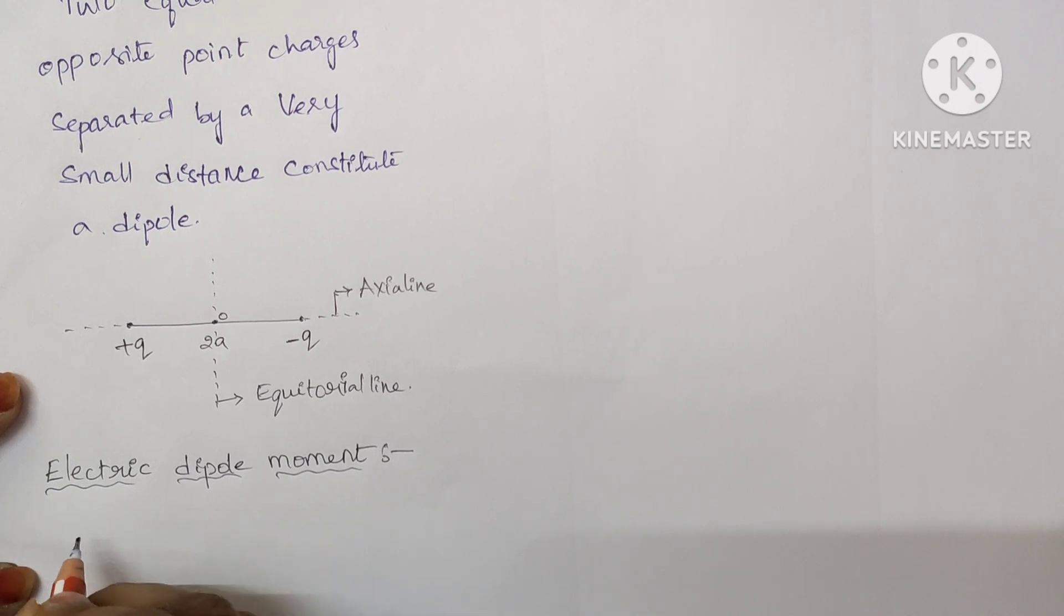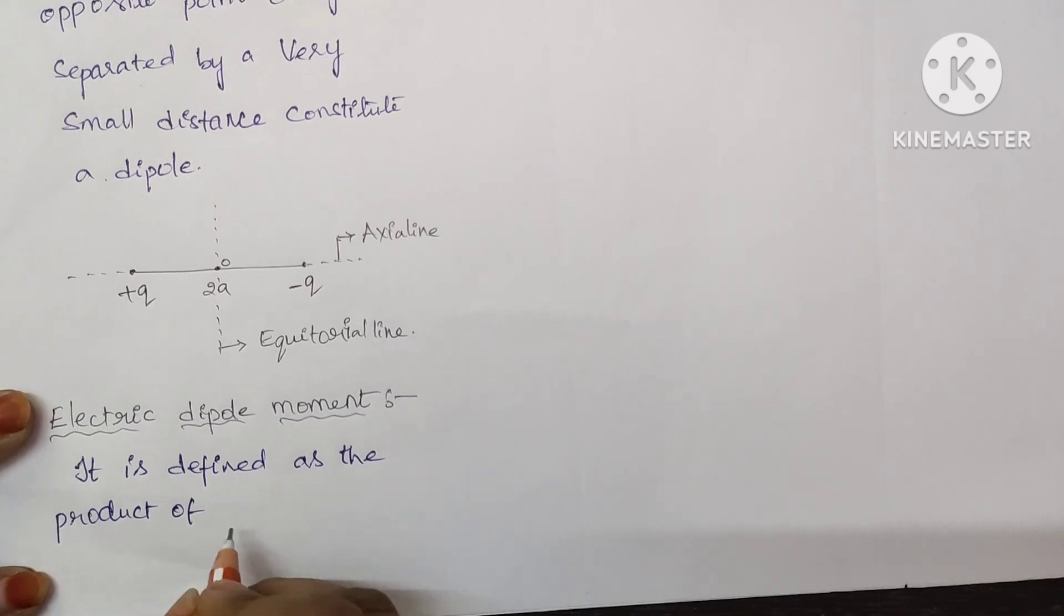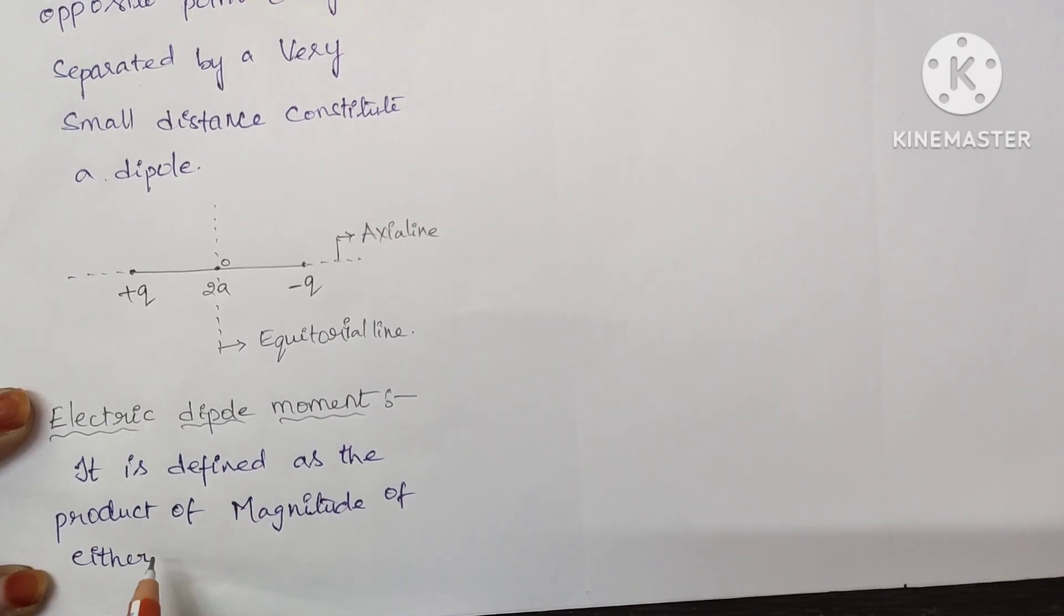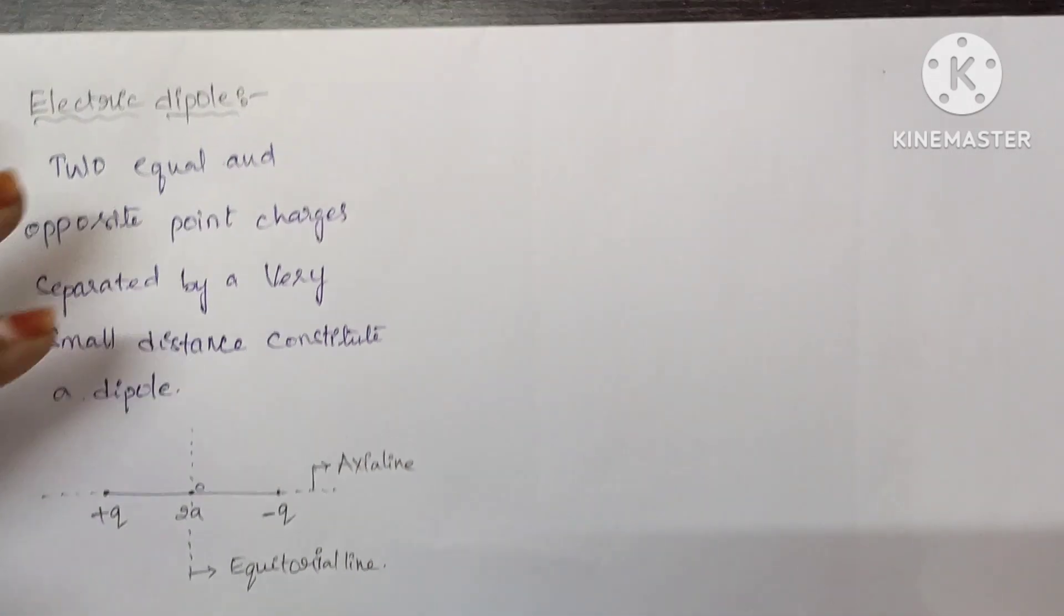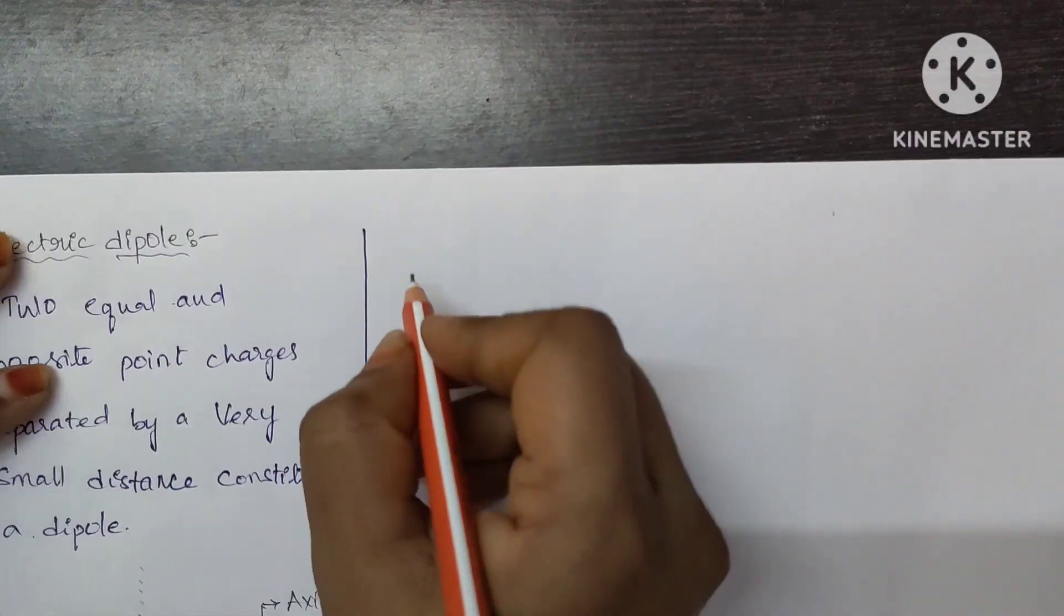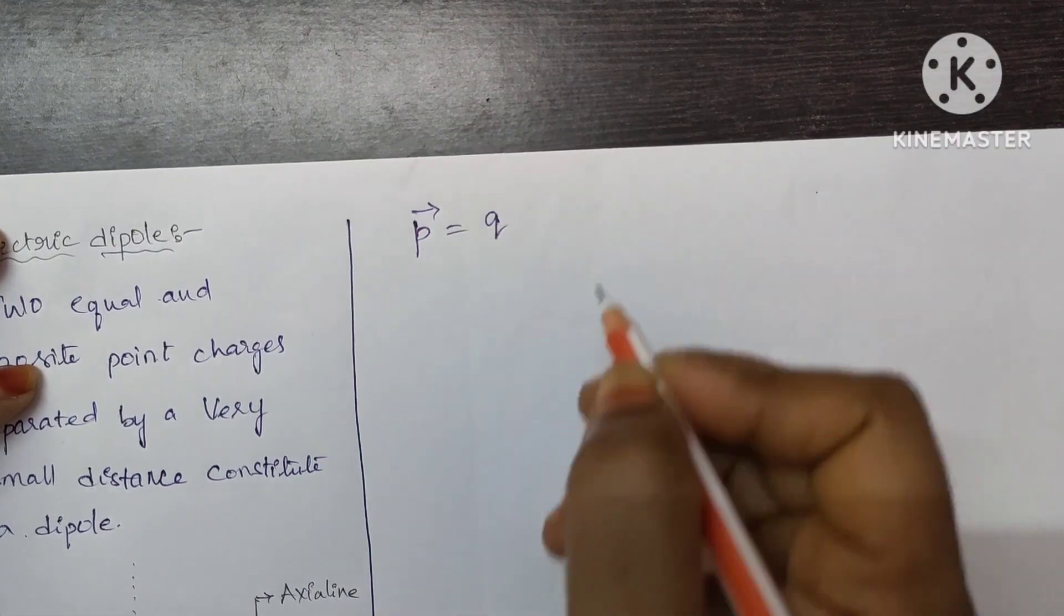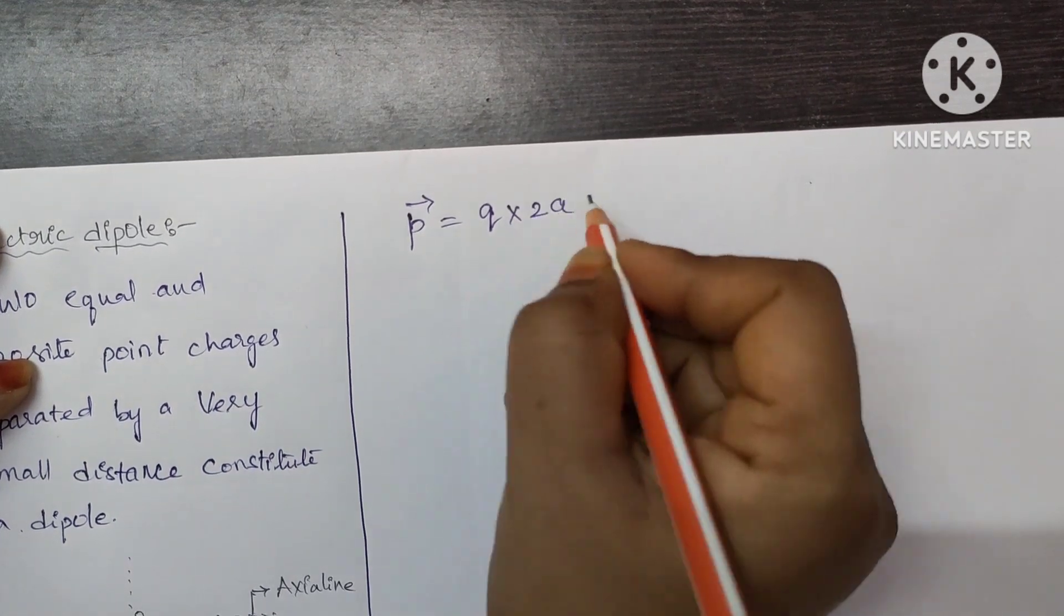It is defined as the product of magnitude of either charge and the separation distance between them. Electric dipole moment is denoted with the letter P which is equal to magnitude of either charge multiplied by the length.